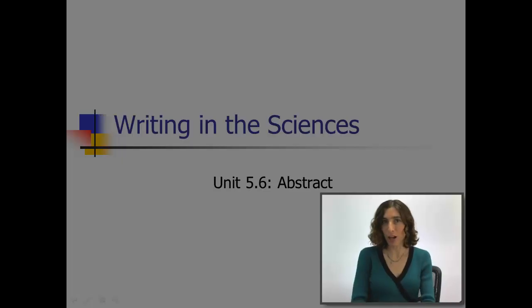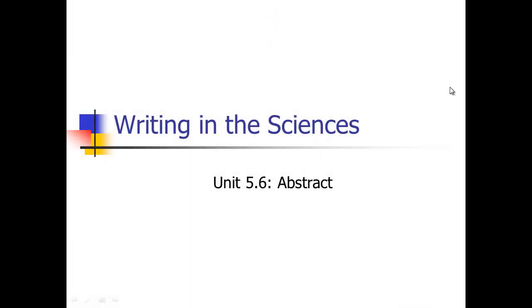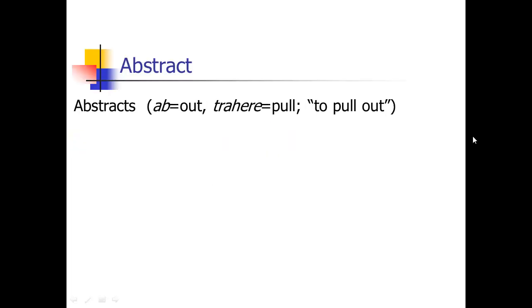In this last module, we're going to talk about writing the abstract. This is going to be a short module because it should be fairly easy to write your abstract after you've written your paper. The word abstract literally means to pull out. So what you're going to do is pull out little sections from your introduction, your results, your methods, et cetera. If you're writing it last, it should be fairly easy to do.